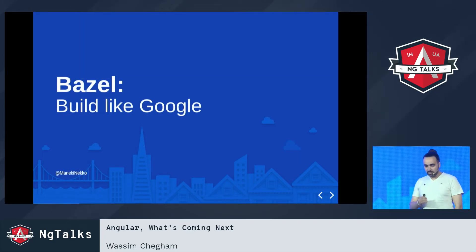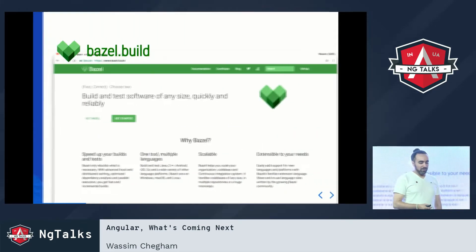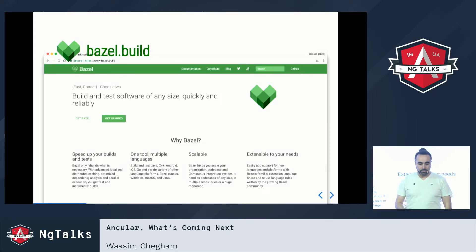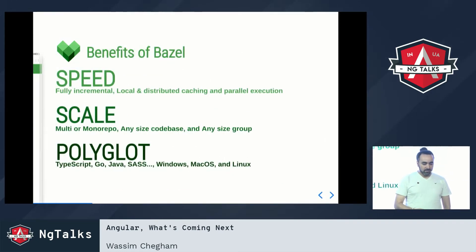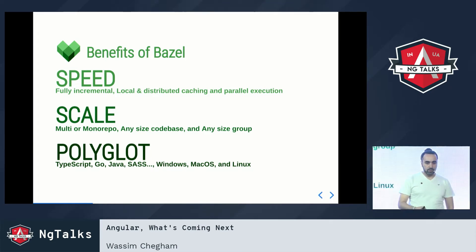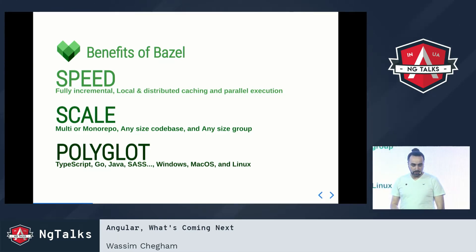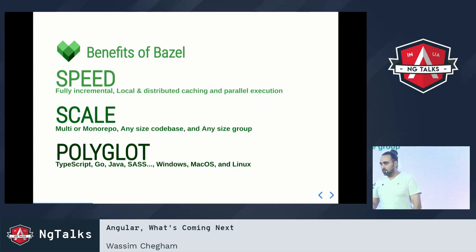Build like Google — well, try to. Bazel is actually an open source project by Google, based on an internal tool called Blaze, which Google has been using for more than a decade. It's a really powerful tool for building super large applications. Some of the benefits of Bazel are its speed — it's a fully incremental build system — and it's able to distribute and run execution on different remote machines. It's also scalable, so you can use it for monorepos and with TypeScript, Java, and many other languages on different operating systems.